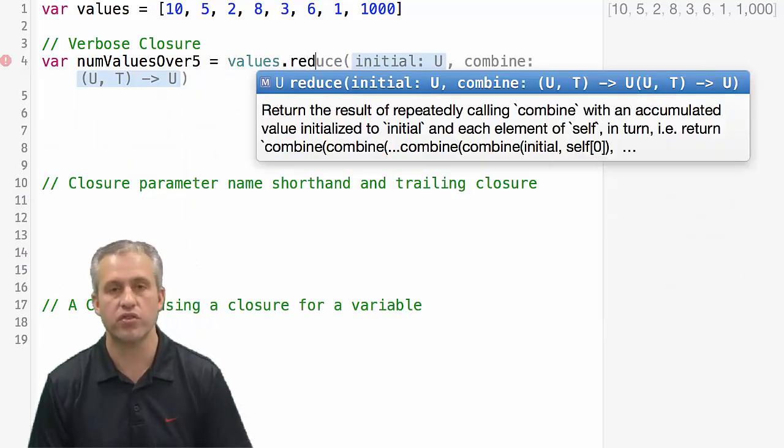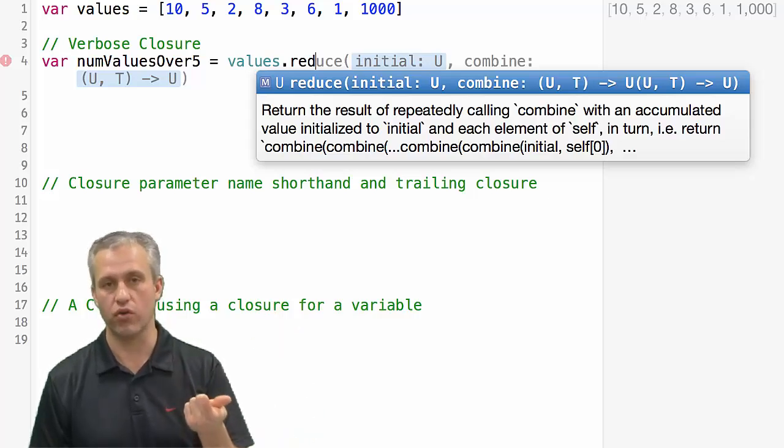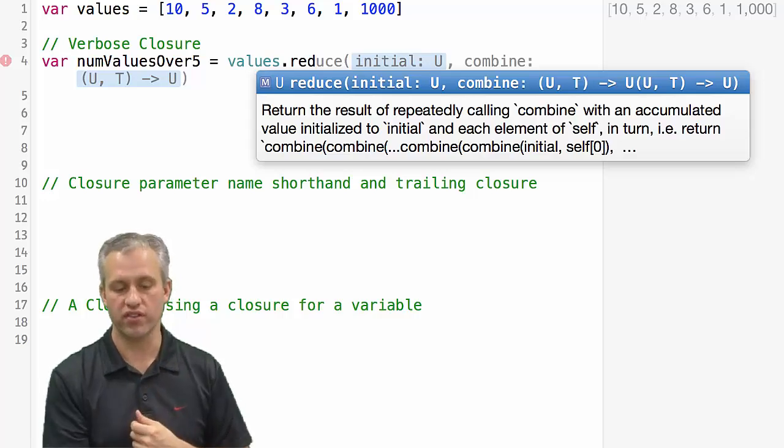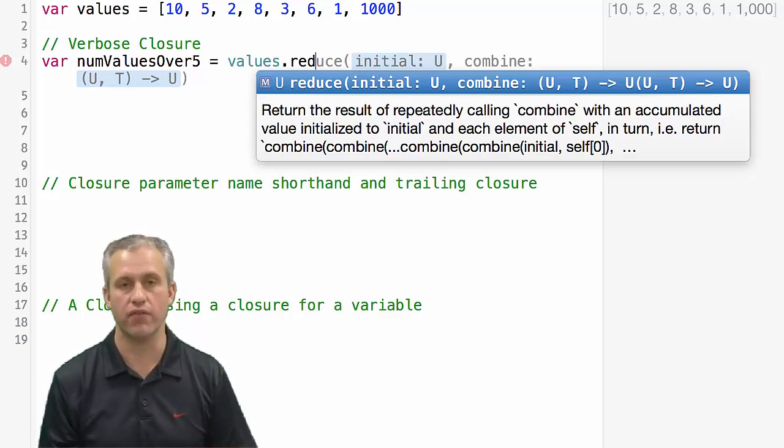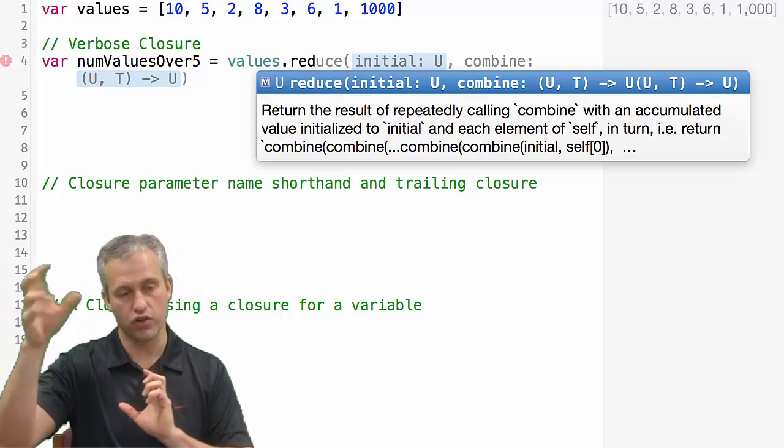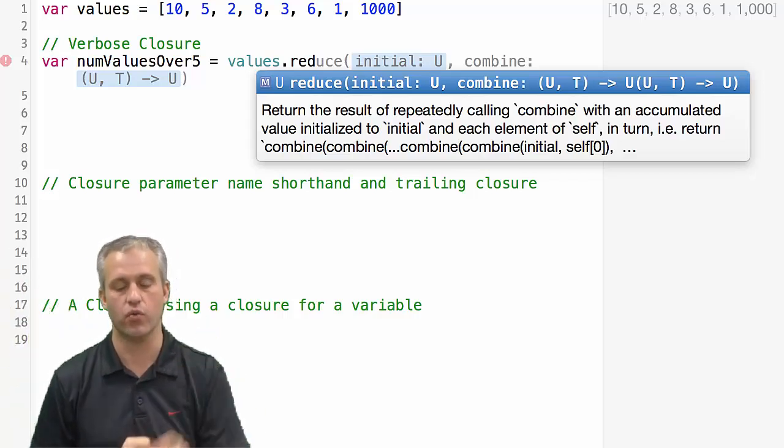What we're going to do is we're going to use a function called reduce. So reduce is a built-in function that lets you basically take an array or some collection and break it down to only one number. In this example, we're trying to look for the ones that are over five. So reduce is a great function to take that whole array and look at it and break it down into one value.